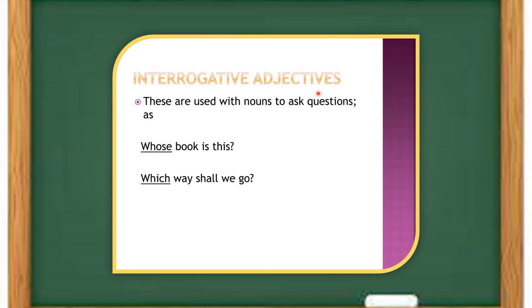Interrogative adjectives. These are used before the nouns to ask questions as whom, what, which. These are used with nouns to ask questions like whose book is this? Which way shall we go? In these sentences, whose and which serve as interrogative adjectives.